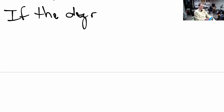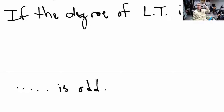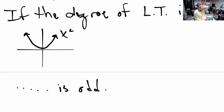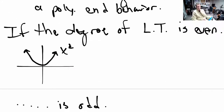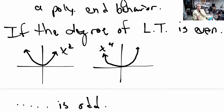So here are the cases. If the degree of the leading term is even, we have two situations we've seen before. We know x squared looks like this — a good representative. It starts in the top left, comes down, and goes up to the top right. It's a good example of an even degree polynomial. What about x to the fourth? It looks more or less the same, but a little bit flatter at the bottom and steeper on the sides.